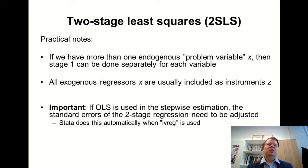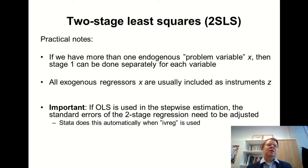Another thing is that two-stage least squares estimation doesn't need to be done literally in two stages. When we use the IVREG command in Stata, Stata computes it in just a single stage. If we do two-stage least squares in Excel, we do get the correct coefficients; however, the standard errors of the second stage regression are not correct and should be adjusted. Therefore, I wouldn't recommend doing two-stage least squares in Excel, because those standard errors will be biased in the second stage. That's one motivation to use Stata, or IV regression packages for R or other software.